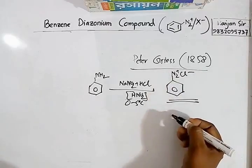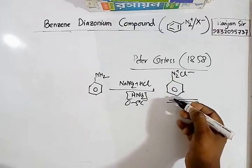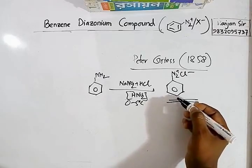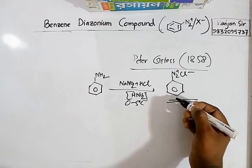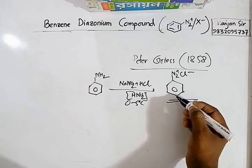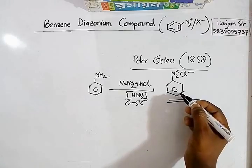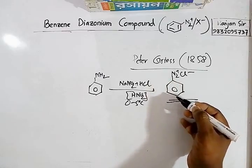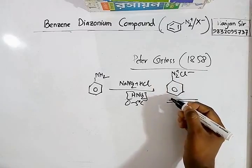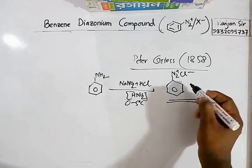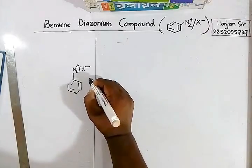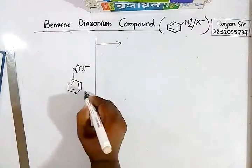Benzene diazonium chloride is light yellow in color and highly soluble in water due to its ionic character. Generally it can be isolated in the solid state, but it is not preferred because in the solid state it is somewhat explosive. That is why it is stored and used in the liquid state.